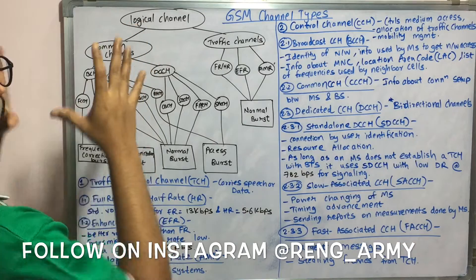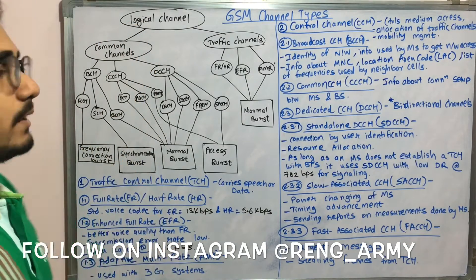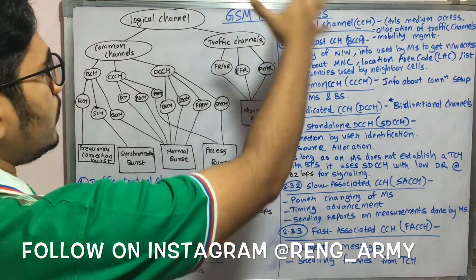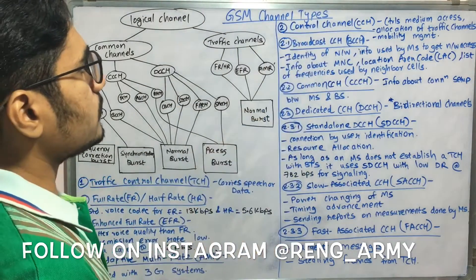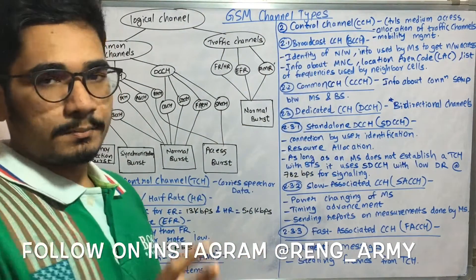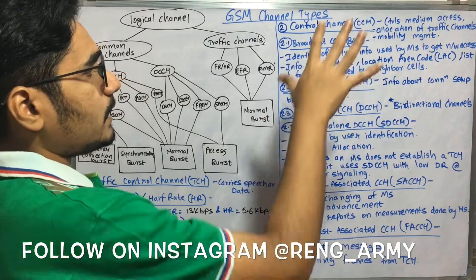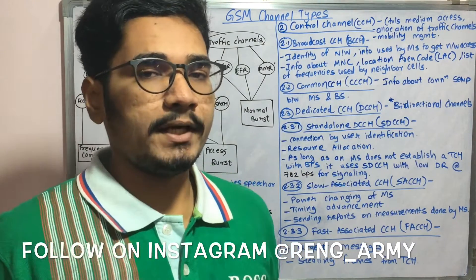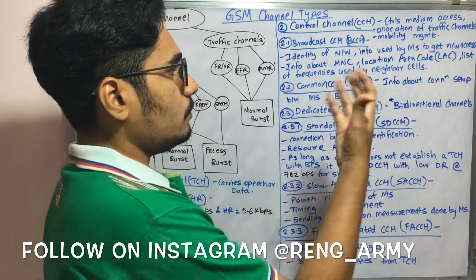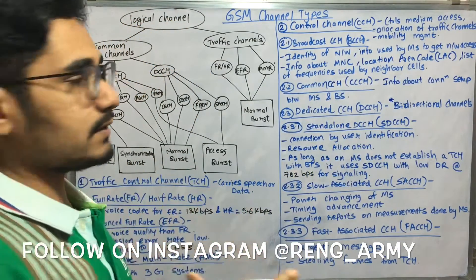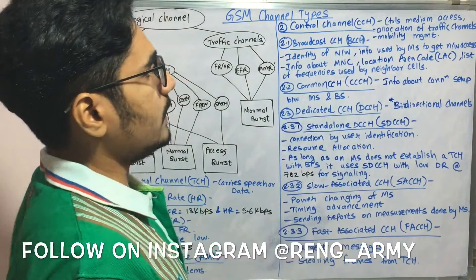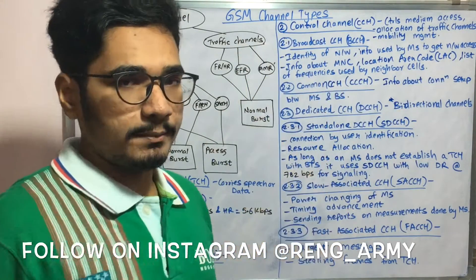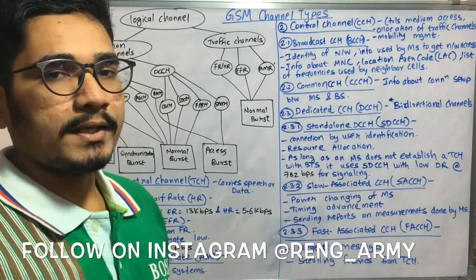Moving on to the common channel. The common channel contains certain control channels. The control channel, represented by CCH, controls medium access — whether TDMA, FDMA, or CDMA — and handles the allocation of traffic channels and mobility management.